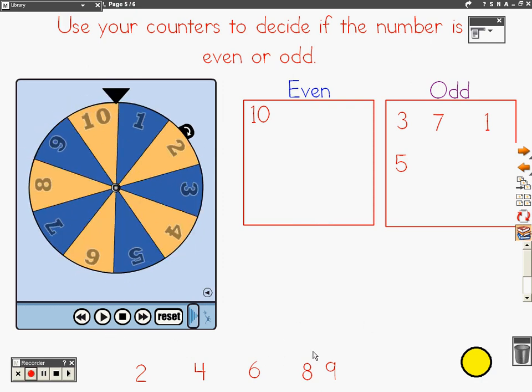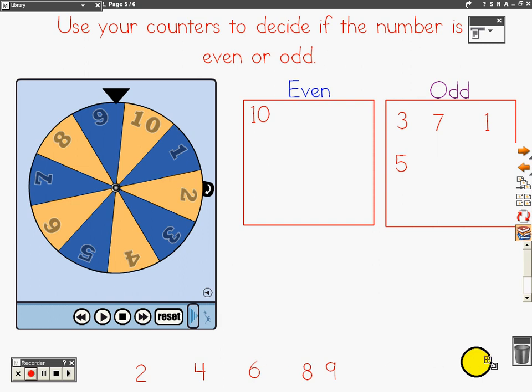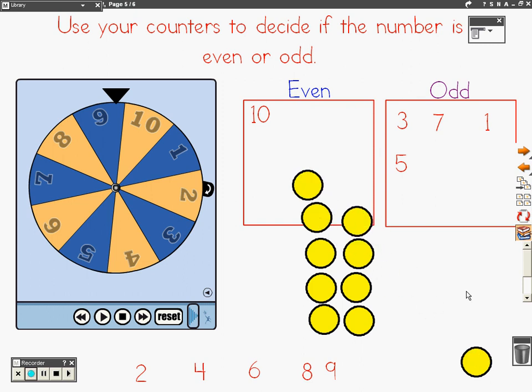Let's try one more. The number nine. Does each number have a partner? No. So the number is odd.